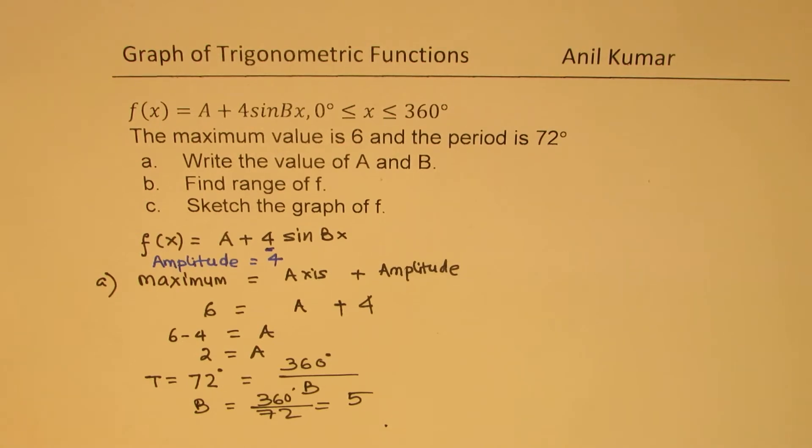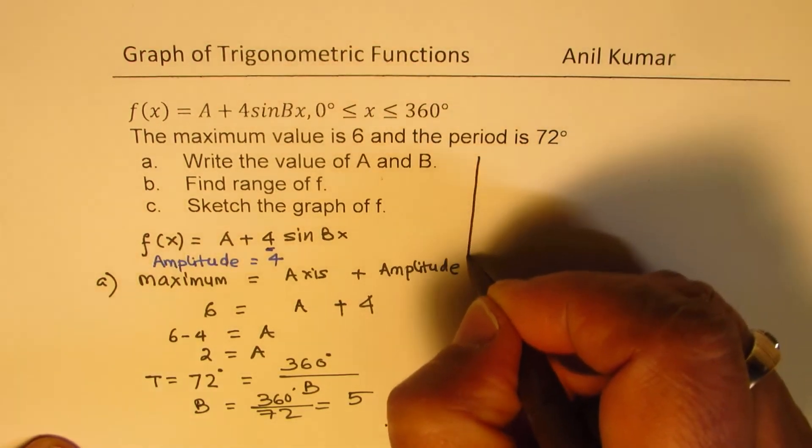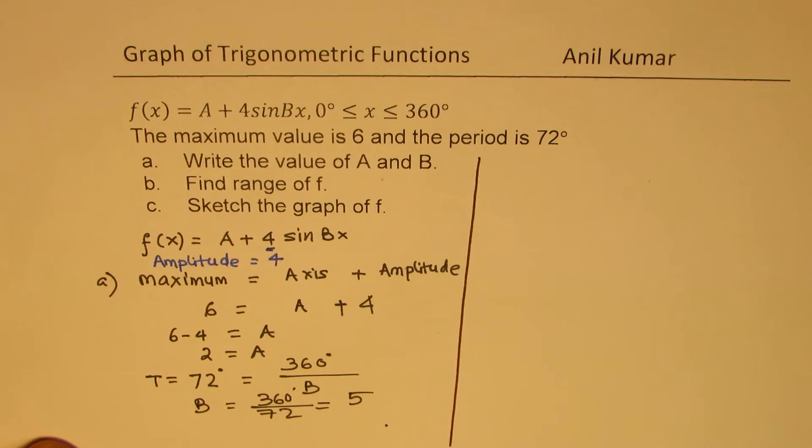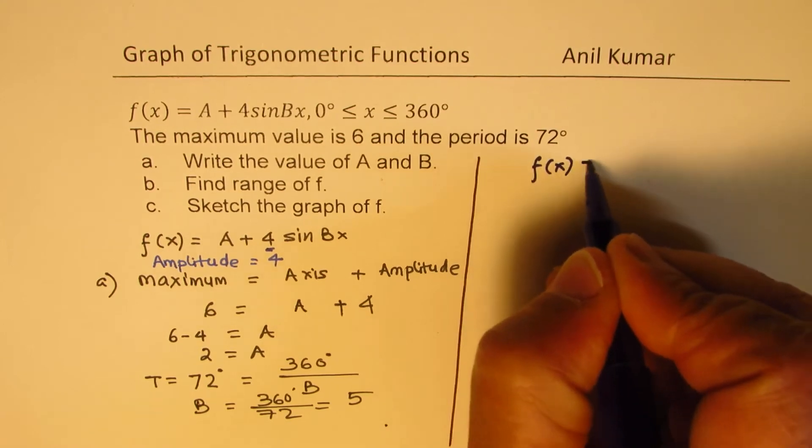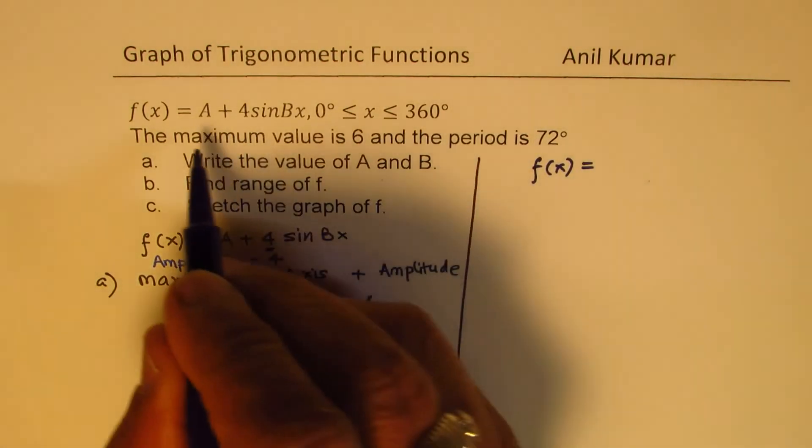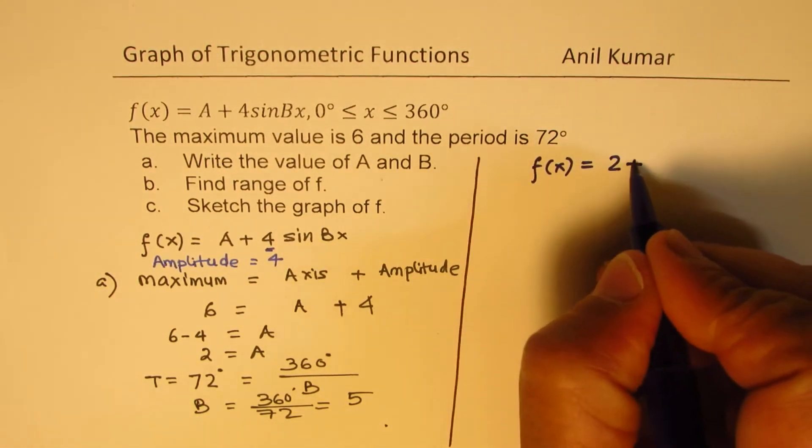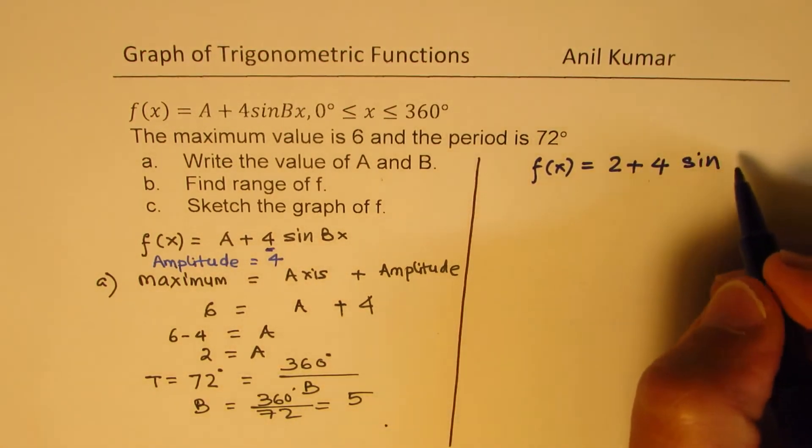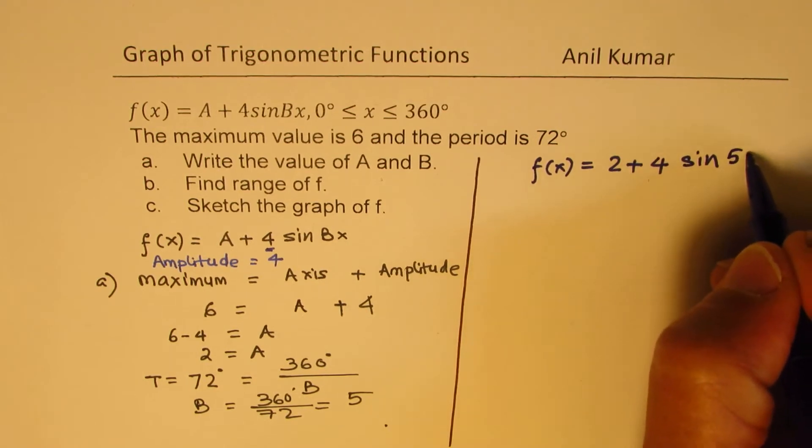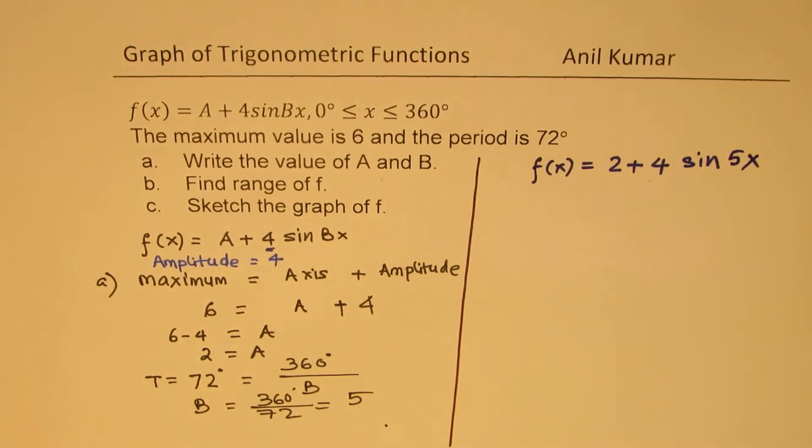So, we now know what this particular equation is. So, let me rewrite the equation. So, the equation for us is, f(x) is equal to, A is 2, plus 4, sine of 5x. Okay? Now, that becomes your equation.